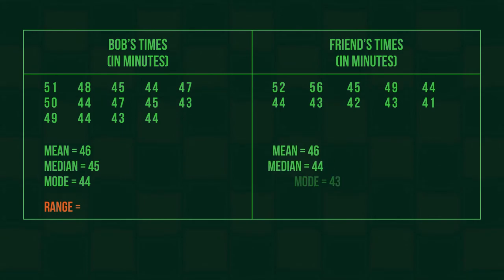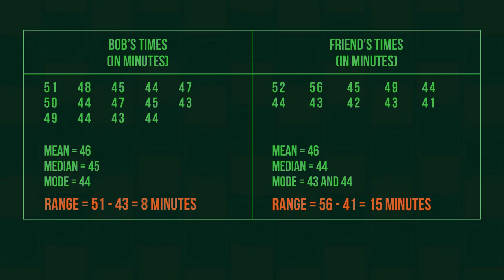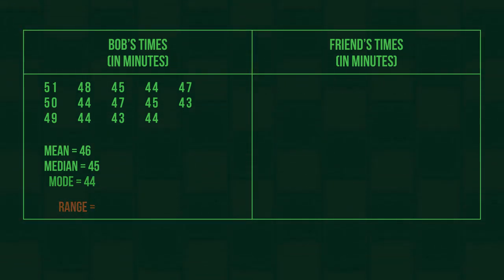Given these running times, whose mean, median, and mode represents their data more accurately? Pause the video and work out the range. Did you get eight minutes for Bob and 15 for his friend? Bob's friend has a lot more variation in his data, whereas Bob is much more consistent with his times.